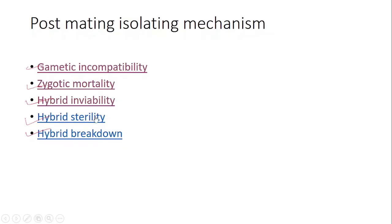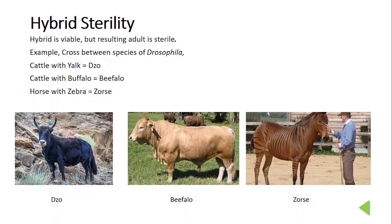Next is hybrid sterility. In hybrid sterility, the hybrid is viable but the resulting adult is sterile. For instance, hybrids between different species of Drosophila, and also crosses between various species of mammals such as cattle crossed with yak (known as zo), cattle crossed with buffalo (known as beefalo), and horse and zebra (zorses) are all sterile animals. A well-known hybrid of horse and donkey, the mule, is robust but sterile.